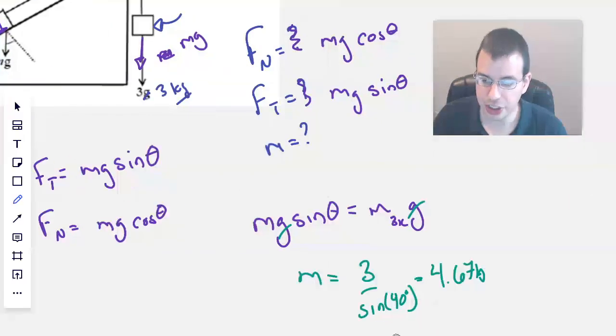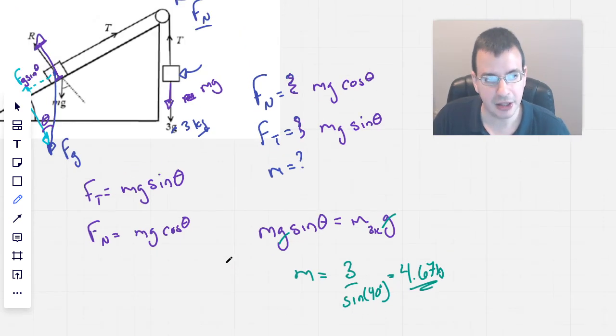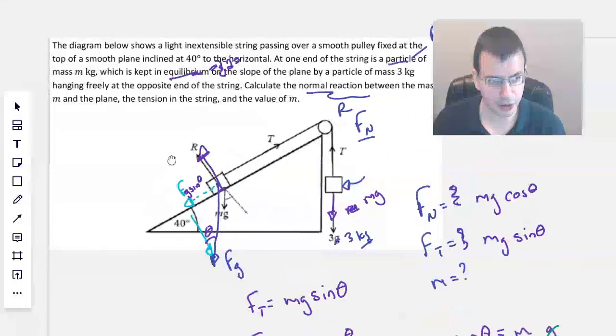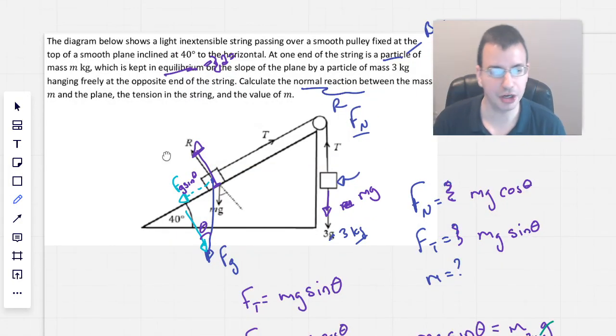And one thing to check to make sure is, it makes sense that this block that's holding up the block on the ramp is going to be heavier than the block that's just straight up and down. So that's how I would approach this classic block on a ramp problem. Hope that helped. See you next time.